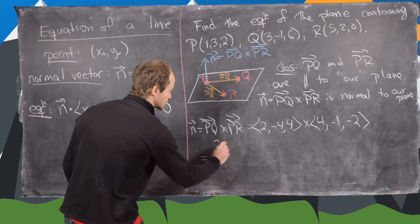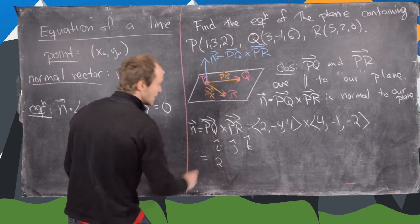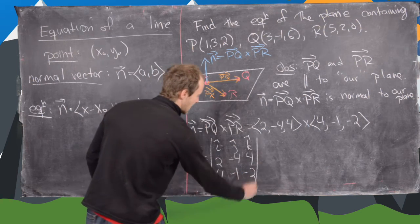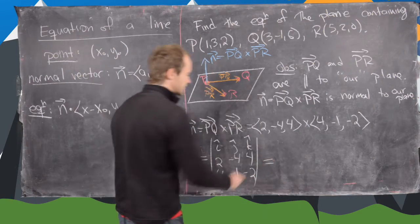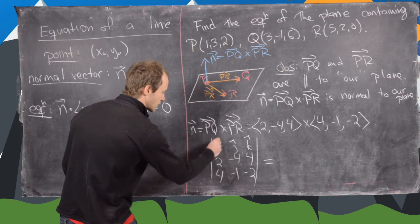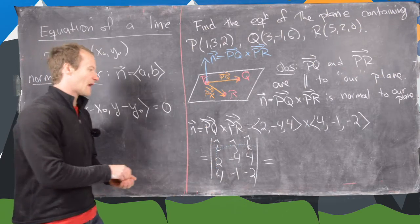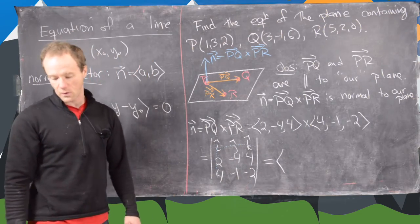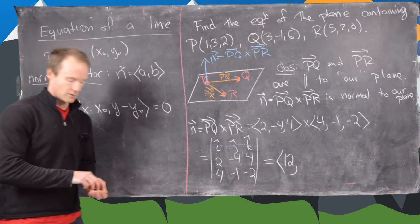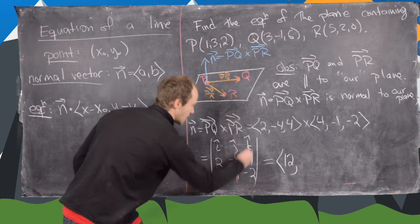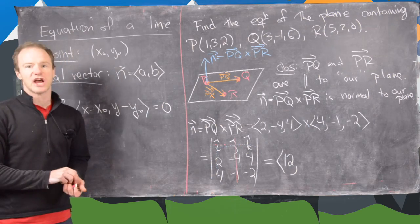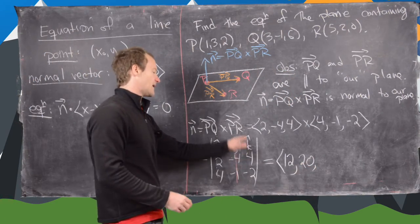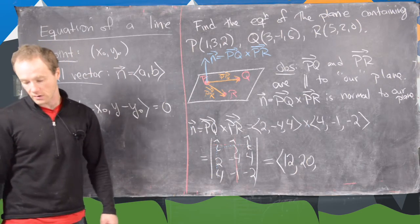We use the determinant version of the cross product with i, j, k in the first row, PQ = (2, -4, 4) in the second row, and PR = (4, -1, -2) in the third row. Expanding across the first row: the i-component is (-4)(-2) minus (4)(-1) = 8 + 4 = 12. The j-component (negated) gives 20. And the k-component gives 14. So our normal vector N is (12, 20, 14).